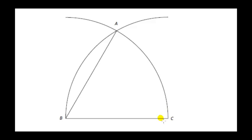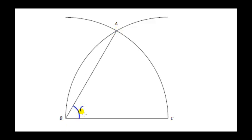Next, with the same setting on the compass, we put the compass point at C and draw a second arc through B, which has the same radius as the first arc — radius BC. Where the arcs intersect, we connect to B, and this angle is 60 degrees.